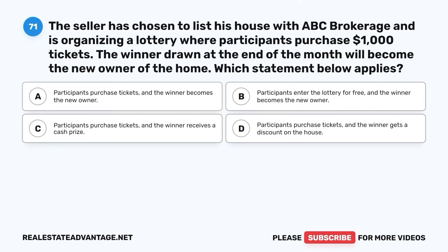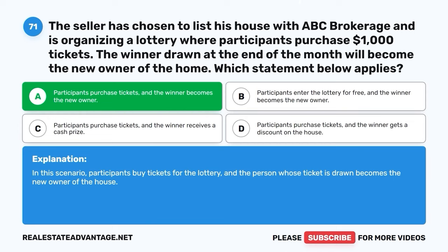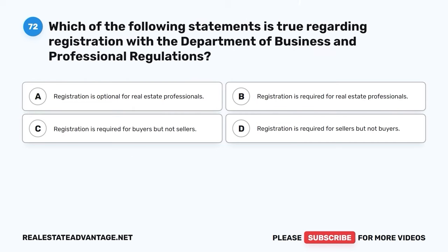Question 71. The seller has chosen to list his house with ABC Brokerage and is organizing a lottery where participants purchase $1,000 tickets. The winner drawn at the end of the month will become the new owner of the home. Which statement below applies? A. Participants purchase tickets and the winner becomes the new owner. B. Participants enter the lottery for free and the winner becomes the new owner. C. Participants purchase tickets and the winner receives a cash prize. D. Participants purchase tickets and the winner gets a discount on the house. The correct answer is A: Participants purchase tickets and the winner becomes the new owner.